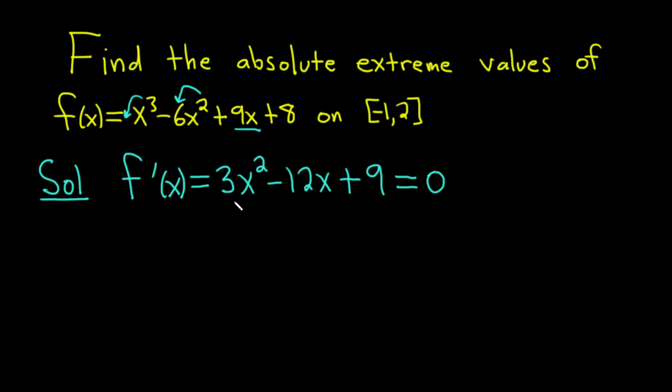It looks like we can pull out a 3 from all of this, which will make the factoring easier. So f'(x) = 3(x² - 4x + 3) = 0.